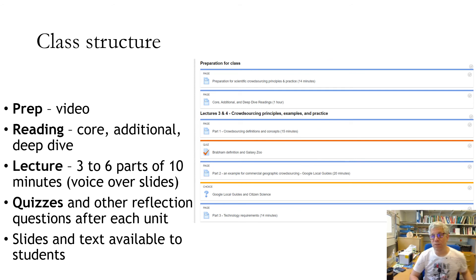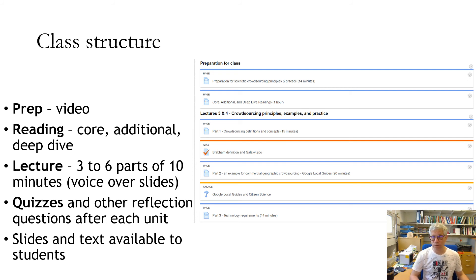The class structure always starts with a prep video that students can watch online before class. There is always some reading, split into core reading they must complete before class, additional reading expected for assignments, and a deep dive for those who are very interested. The online lectures are broken into three or six parts so they can be watched in segments. There are quizzes and reflection questions in each unit, and the text and slides are available online — I use a slightly different version in class to address different points.